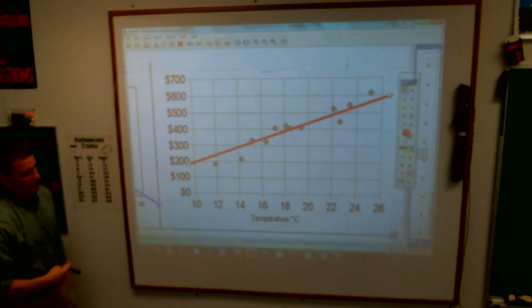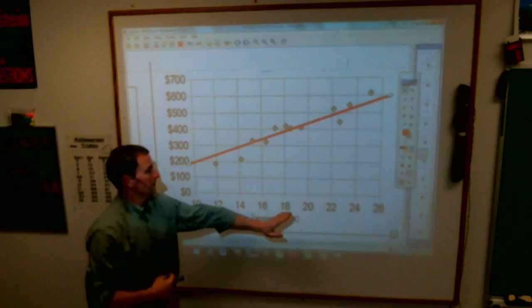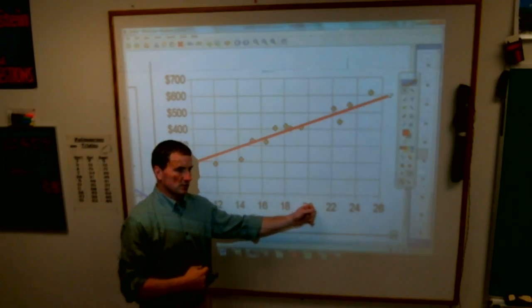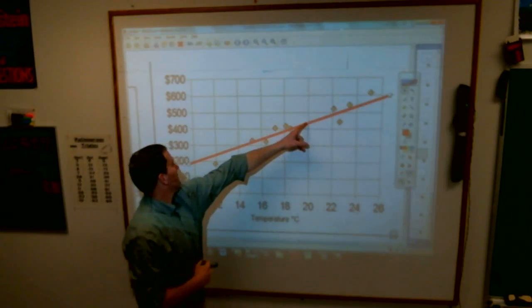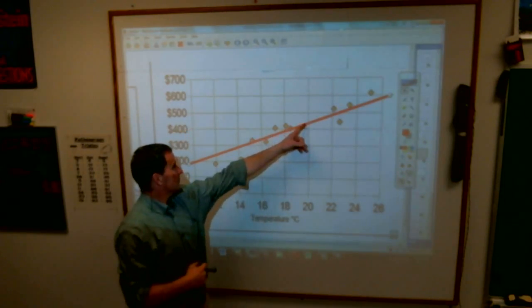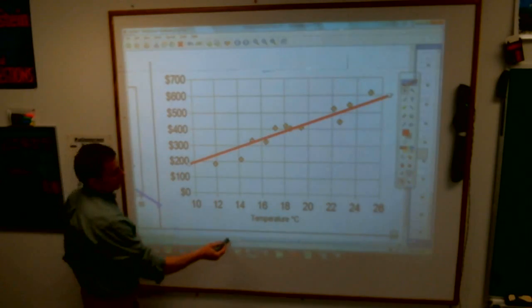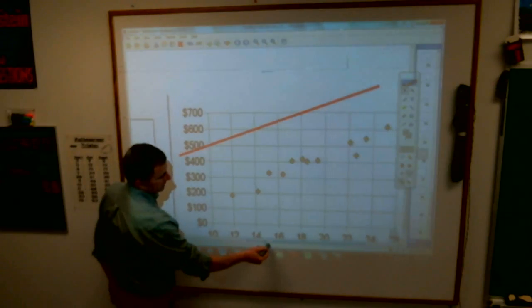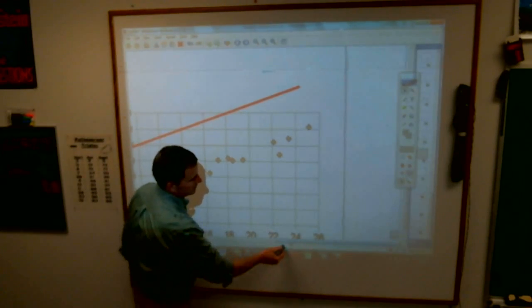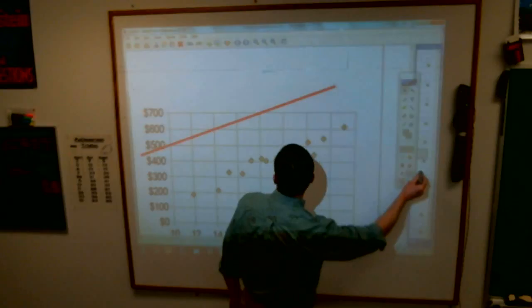And then again, with that line of best fit, you could predict if it's 20 degrees Celsius, which is relatively warm, how much it would cost the heat. It would be somewhere between $400 and maybe $425. And then if you look way over here, is there another one? There's another one.